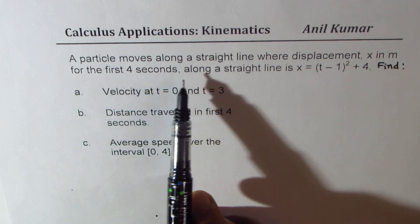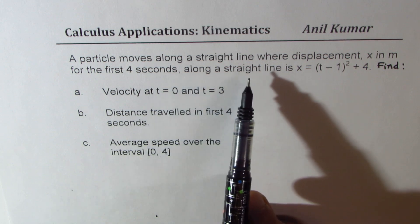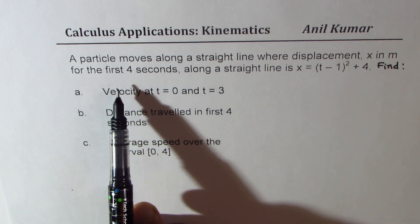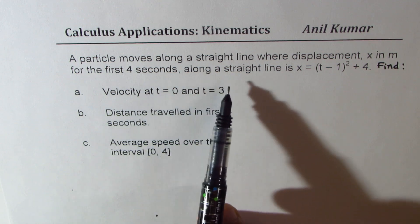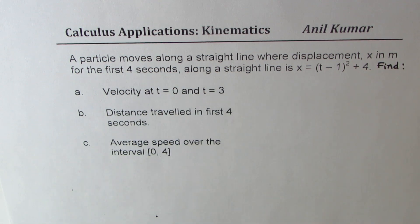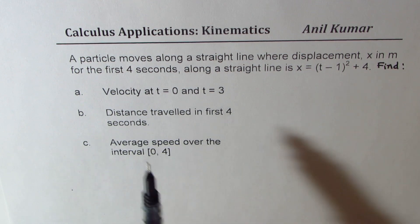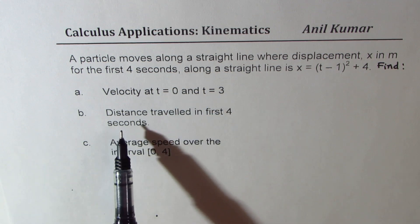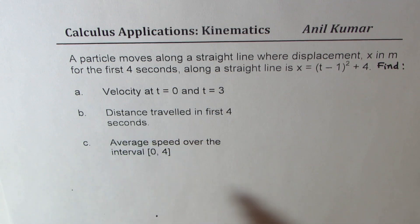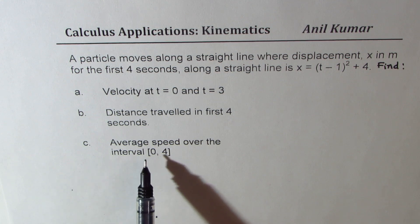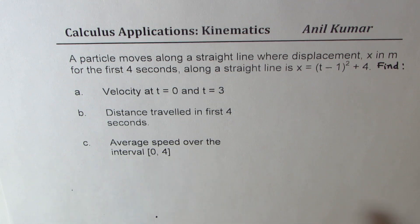The equation here is: a particle moves along a straight line where displacement x in meters for the first 4 seconds is x equals t minus 1 whole square plus 4. You need to find velocity at t equals 0 and t equals 3, distance travelled in the first 4 seconds, and average speed over the interval 0 to 4.